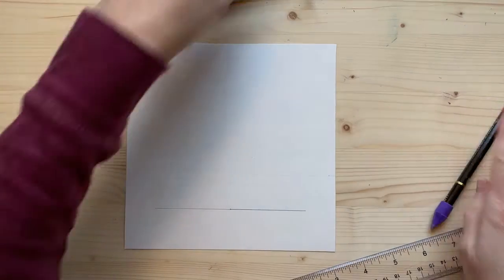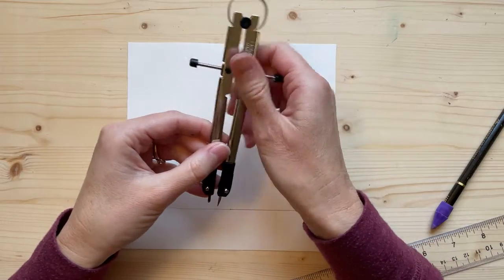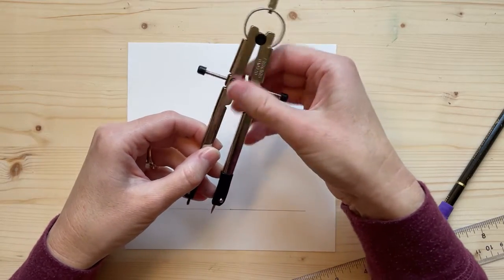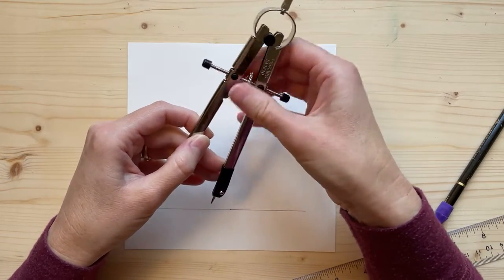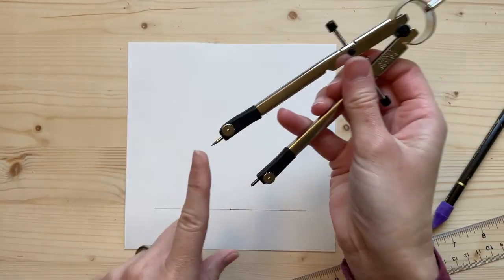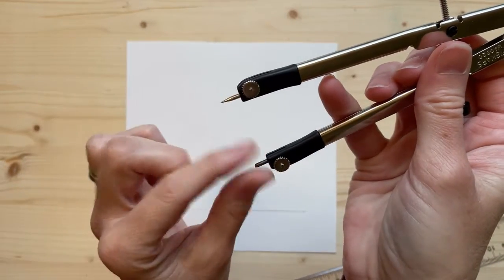So to do it with the compass, to make my other sides with the compass, I'm going to open my compass up. You're going to put the pointed spot, not the lead, but the pointed spot, on the left edge of your triangle.